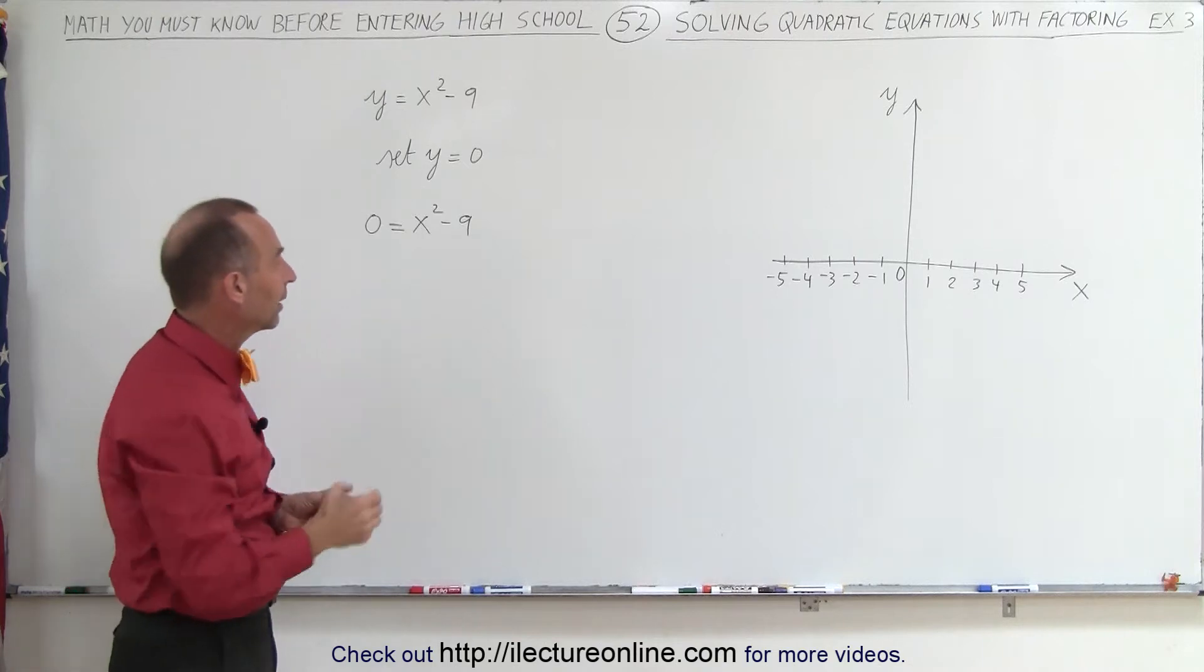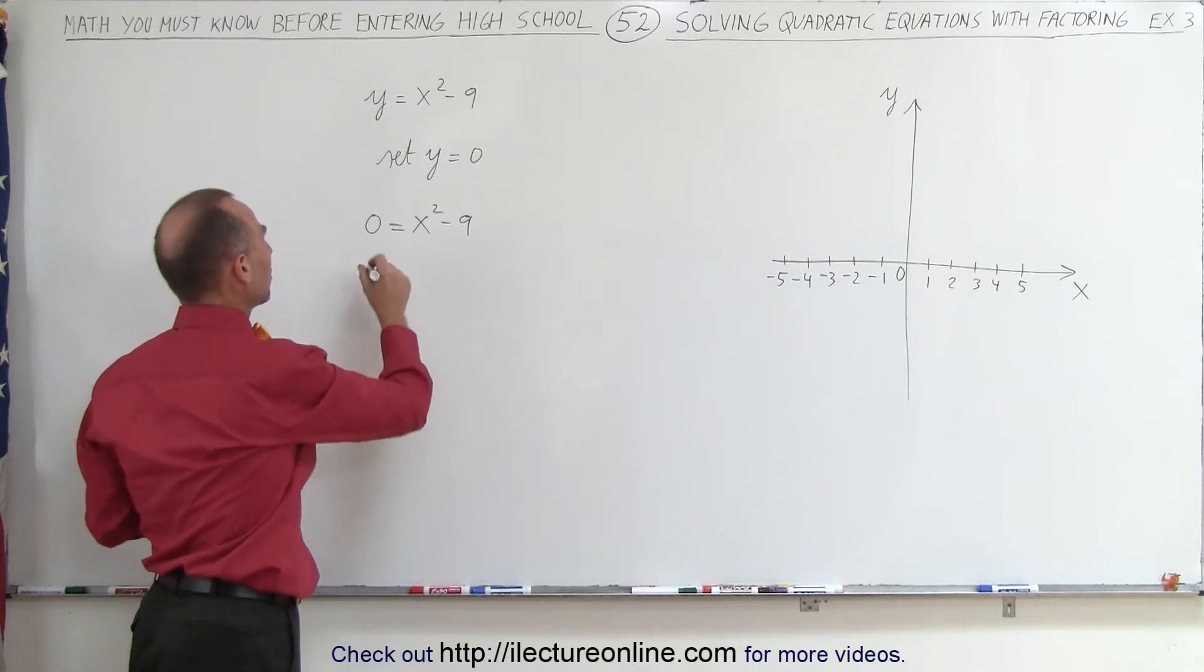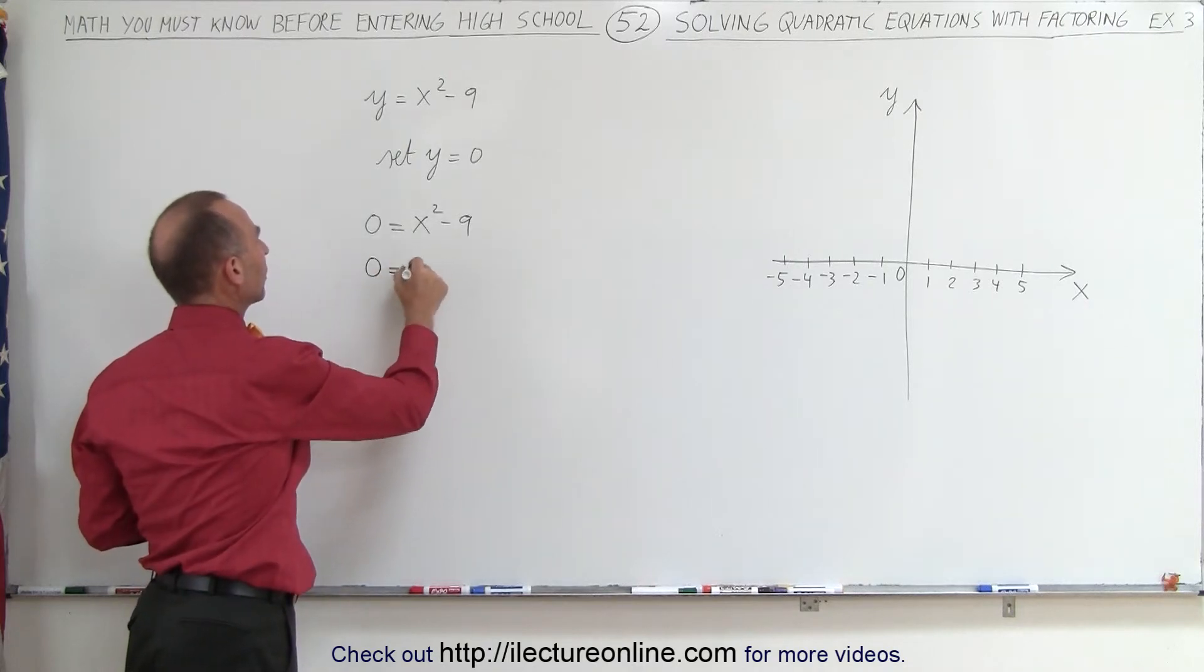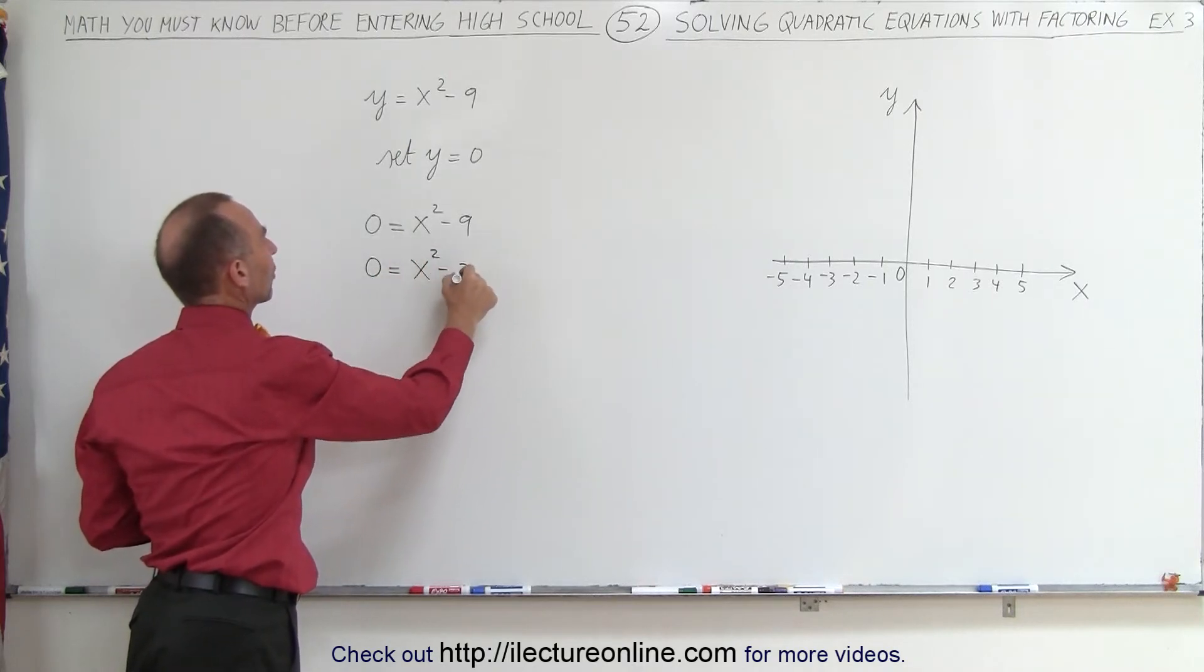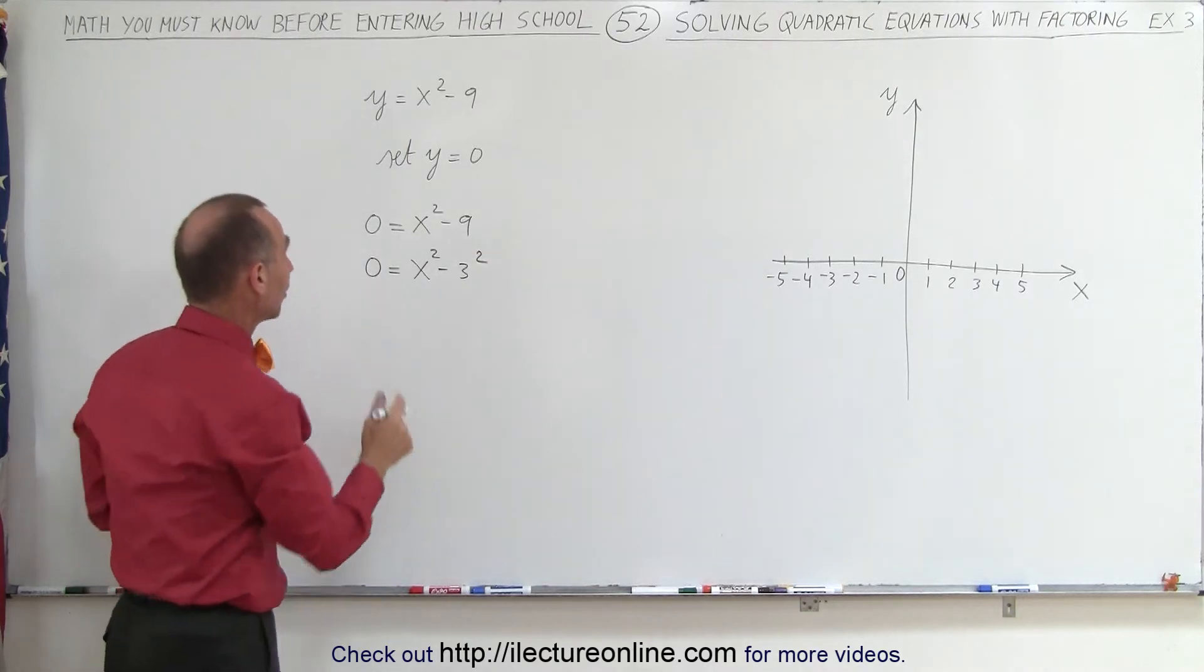So, we're going to do that by factoring the right side. And notice that it's the difference between two squares. This can be written as 0 equals x squared minus 3 squared. And when you factor the difference of squares, it's done as follows.